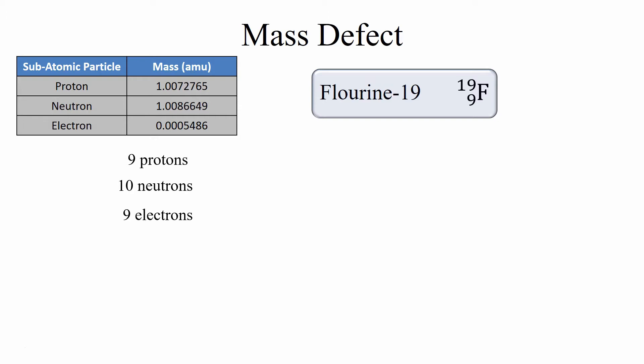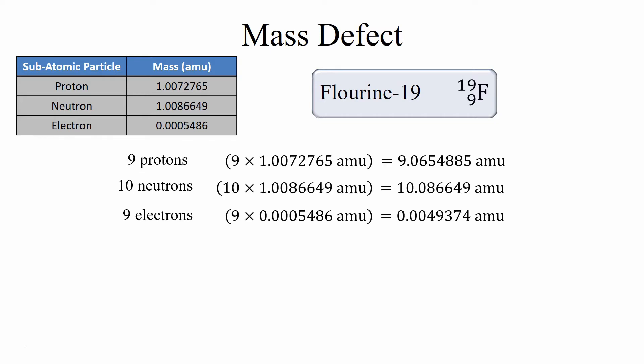We know what the mass of these subatomic particles already is and if we add up the masses of 9 protons, 10 neutrons, and 9 electrons we get about 19.157075 atomic mass units. Now you may think this is very highly precise and there's a reason why we're doing this at such high precision.